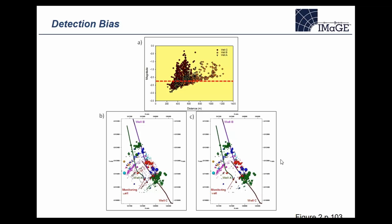An example shown: a three-well frac with a vertical monitoring well in the center. The two images show the same results — on the left all events, on the right only events above magnitude −2.2. Above that level, over a certain distance, we remove the sensitivity bias of recording smaller events closer to the geophones. Another way is to draw a circle of radius equivalent to where that magnitude threshold crosses the magnitude-distance curve, meaning everywhere within that circle we can record events of this magnitude.